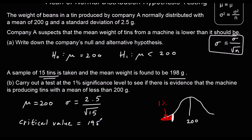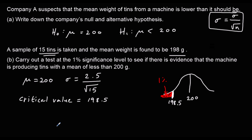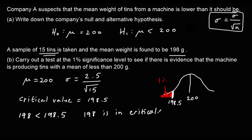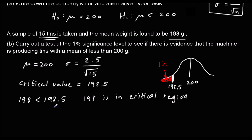So the critical value is 198.5. The mean from our sample was 198, so 198 is less than 198.5 — it is in the critical region, in the most extreme 1%. So we can reject H0 and accept H1.